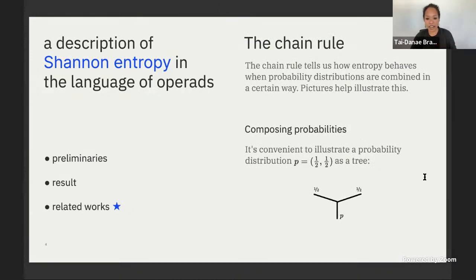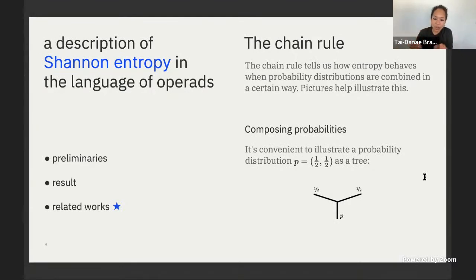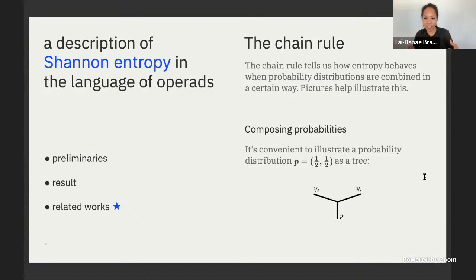Another piece of preliminary information is that this sequence of functions satisfies a very important property called the chain rule. The chain rule essentially tells us how entropy behaves on composite probability distributions — there's a certain way to compose probabilities, and the chain rule says what entropy does when you compose probabilities in this way. Before stating the chain rule, let me tell you about the algebraic structure of probability distributions, and pictures will be very helpful.